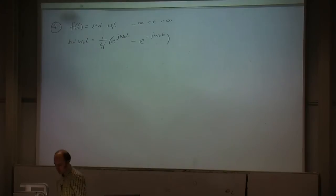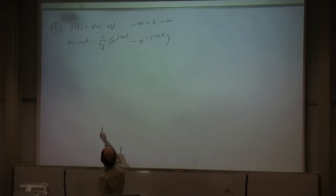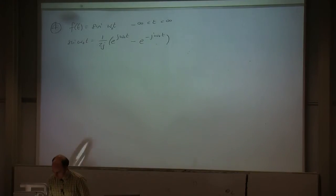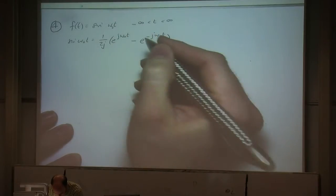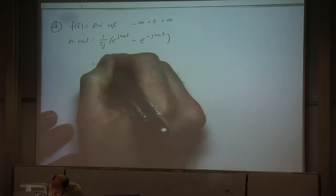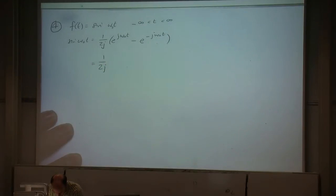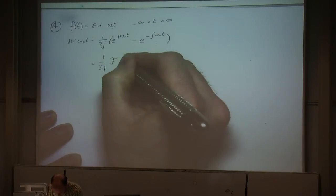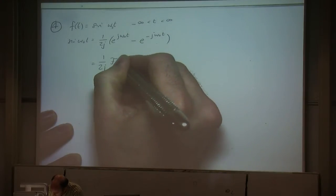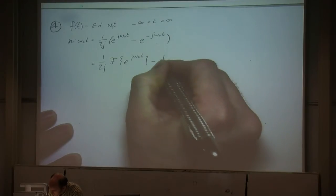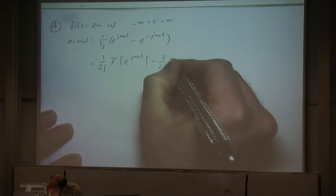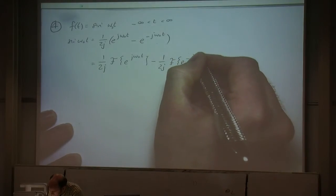That's Euler's relationship between sine, cosine, and e, and we can use those relationships to convert sine into exponentials. Since we know how to take the Fourier transform of both of those, we can write 1 over 2j outside as a constant — giving us the Fourier transform of e to the j omega-naught t, minus 1 over 2j times the Fourier transform of e to the minus j omega-naught t.